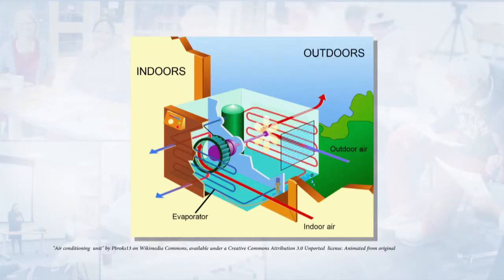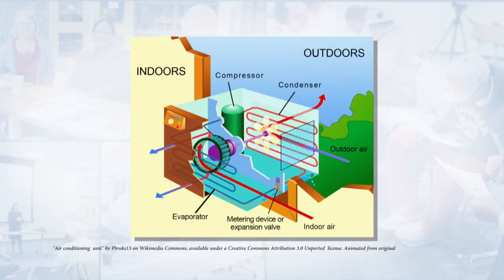The evaporator, the compressor, the condenser, and the metering device. Now we'll take a look at where those components are in your standard residential unit.